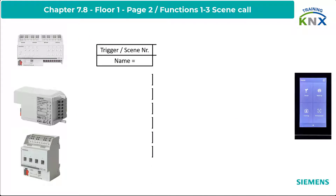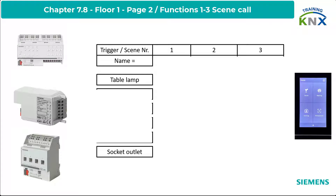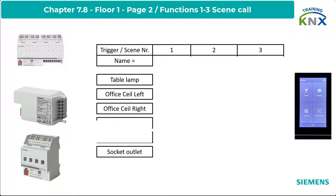We now want to create three scenes or events for the functions created so far. This means 2x Switching: Socket Outlet and Table Lamp; 2x Dimming Value: Office Ceiling Left and Right; and 1x Solar Protection, which means 2x 8-bit control for Blind Height and Slat Angle Position.